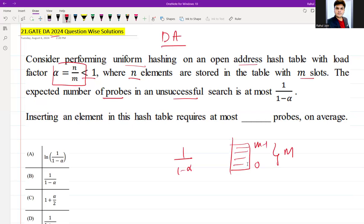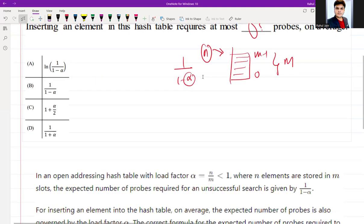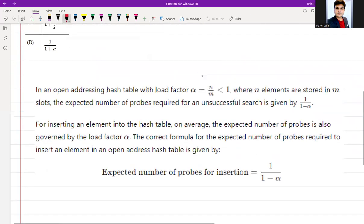Where α is the load factor and we have n elements to store in this hash table. So inserting an element in this table requires at most how many probes on average? We can look at the solution in the following way.